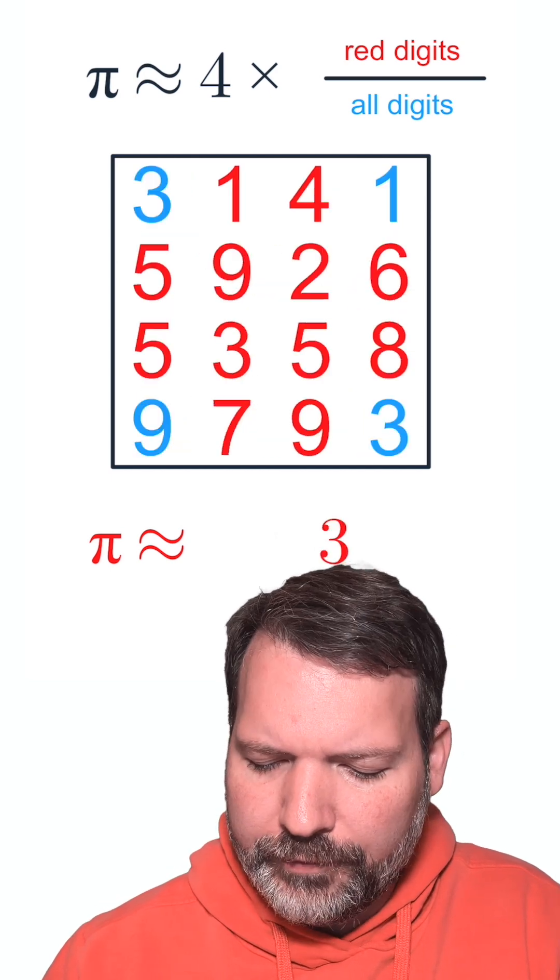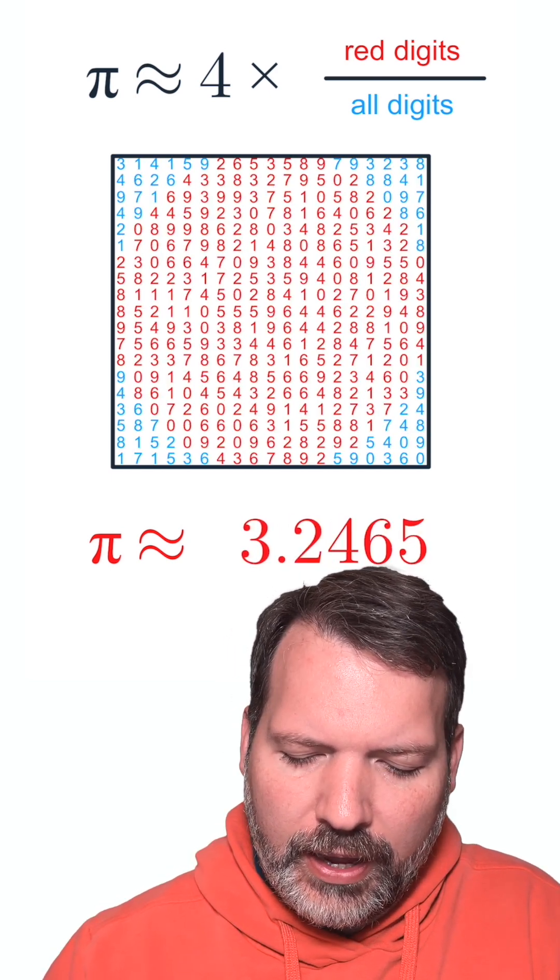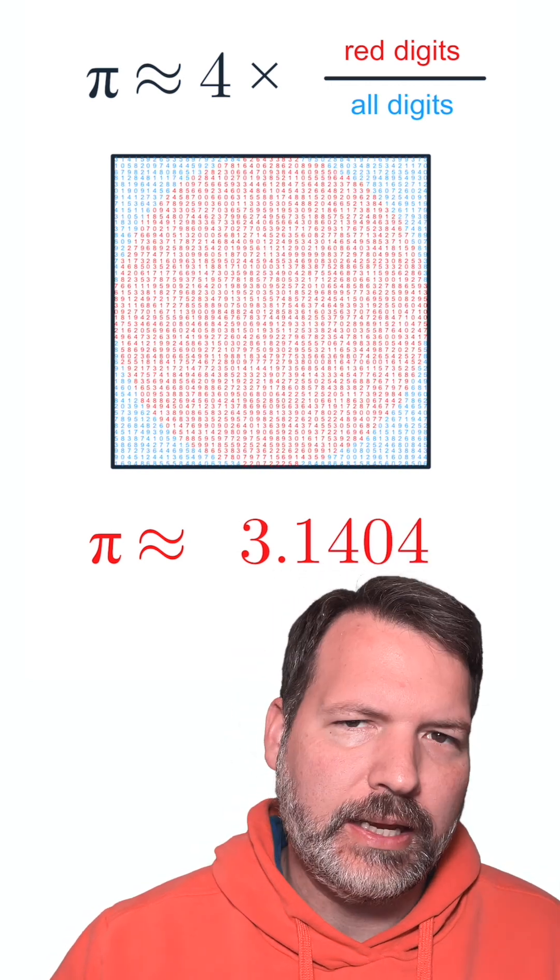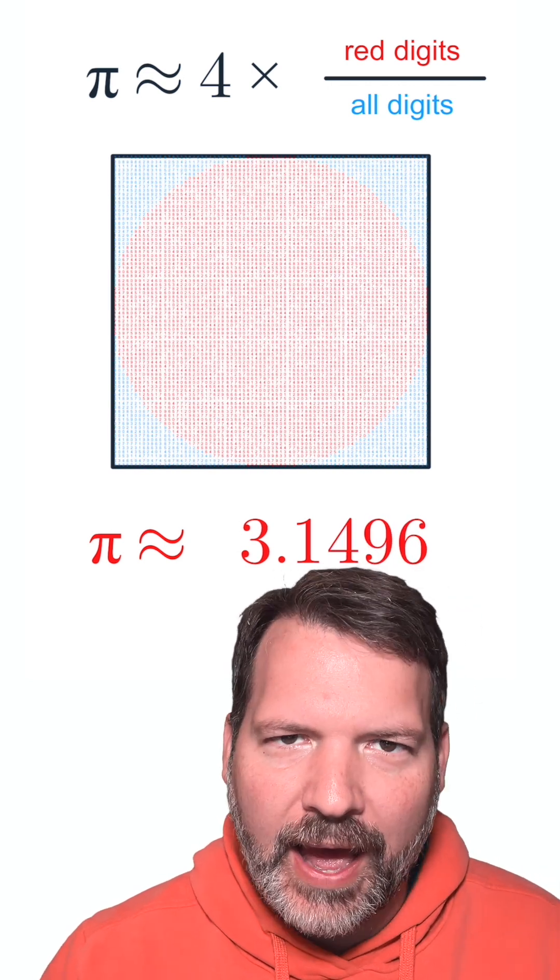Wait, no, something's wrong. We need to get a few more digits involved here, and as we involve more and more digits, you can see that we're starting to get a lot closer to pi's actual value.